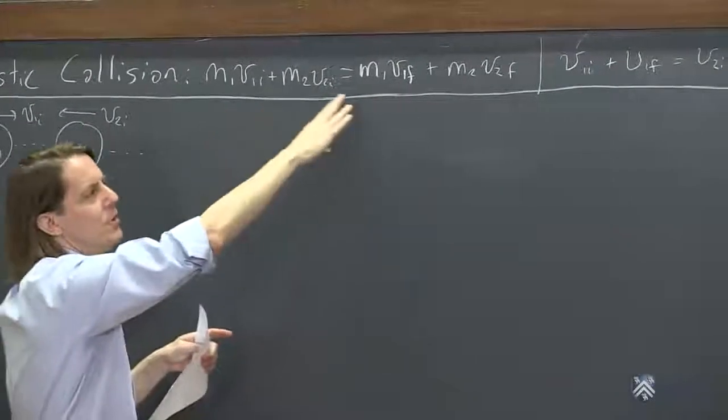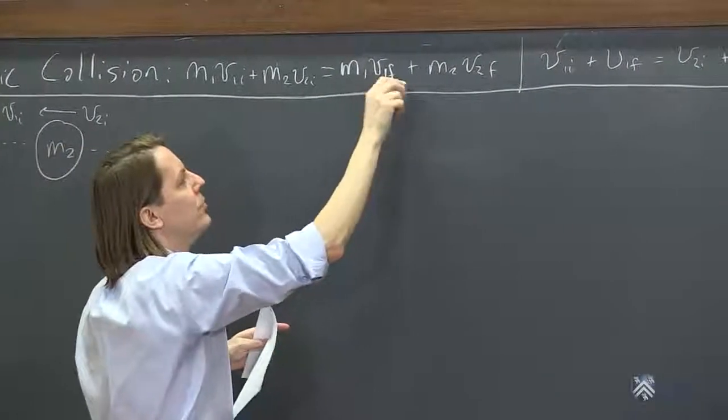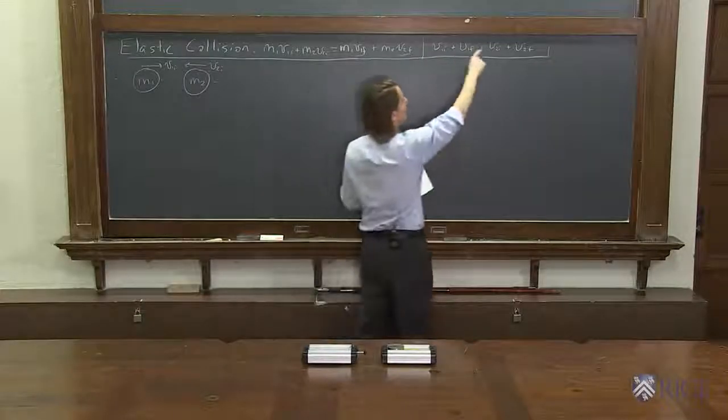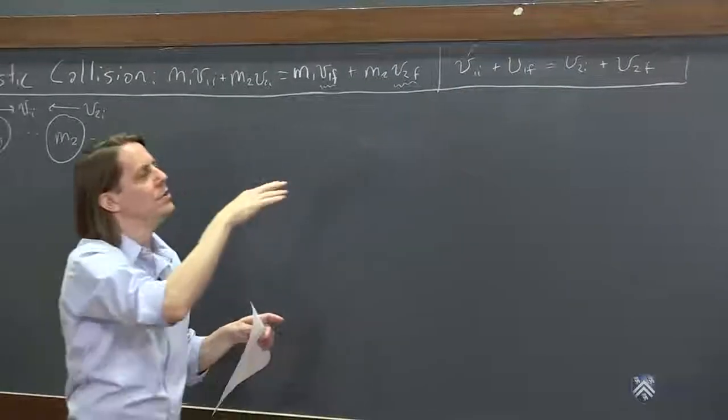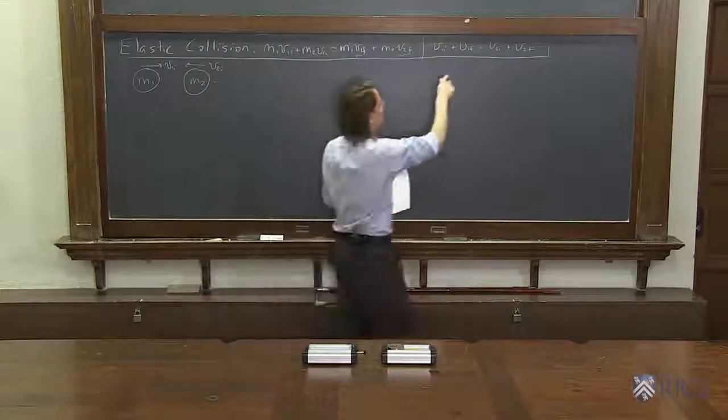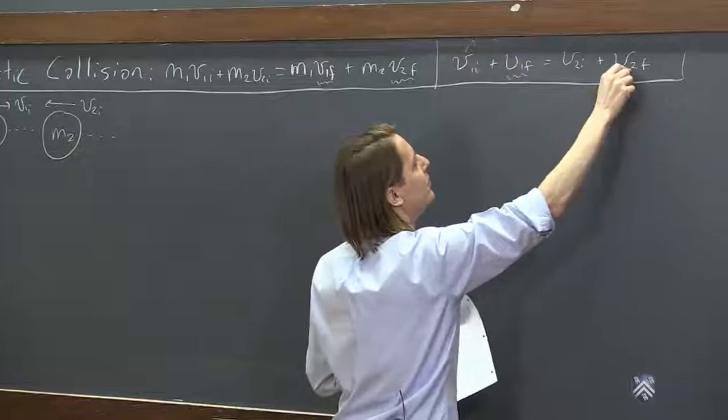This is just conservation of momentum, where here's your unknowns, V1 final and V2 final. And then this is really an algebraically altered version of conservation of energy, again with V1 final and V2 final.